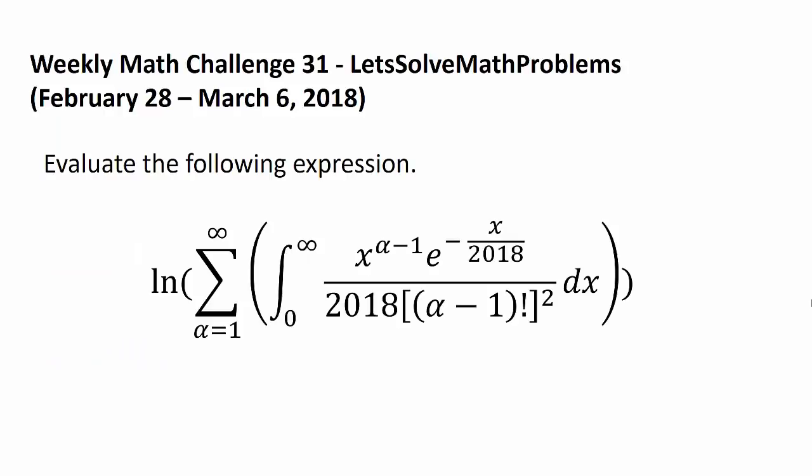Evaluate the following expression. Natural log of the summation from alpha equals 1 to infinity of the definite integral from 0 to infinity of x to the alpha minus 1 power times e to the negative x over 2018, divided by 2018 times the quantity alpha minus 1 factorial squared dx.